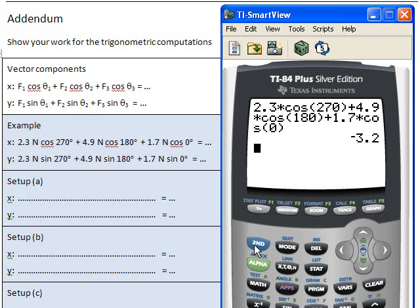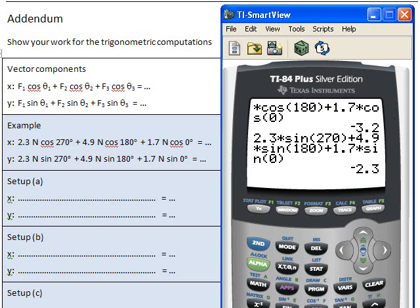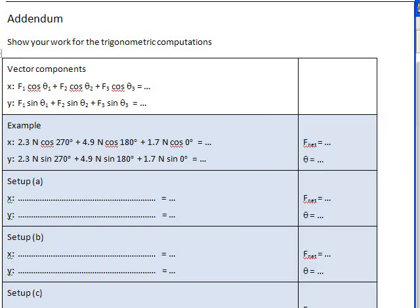The negative, of course, means that it points to the left. And then the y-direction, all I have to do is just do exactly the same thing except change the cosines to sines. And again, the minus means that it points down. So minus 3.2 minus 2.3.